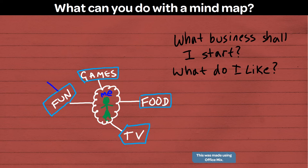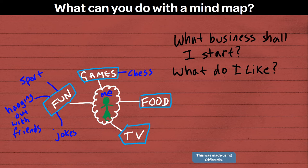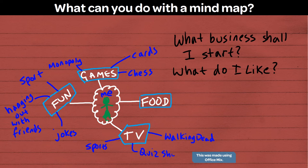So what do I like to do for fun? Sport, hanging out with my friends, jokes. What kind of games do I like? Chess, card games, Monopoly. What TV do I watch? Walking Dead, sports on TV, quiz shows. What food do I like? Coffee, cakes, vegan food. Okay, how can I put these together into an idea?